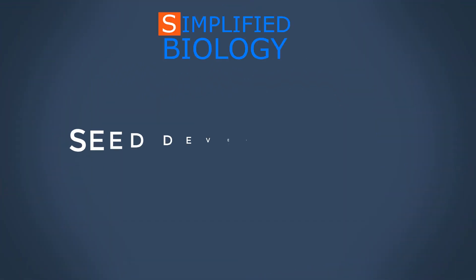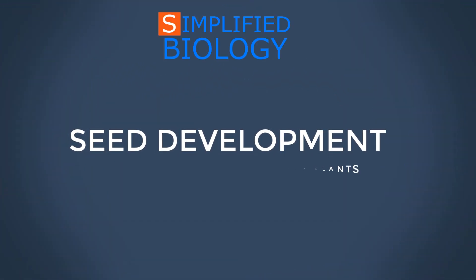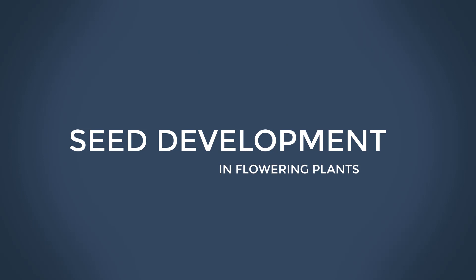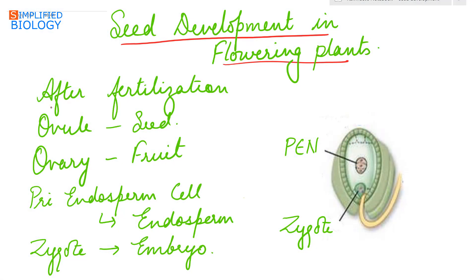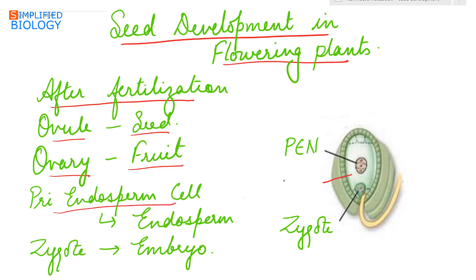Hello friends, welcome to Simplified Biology. Today's topic is seed development in flowering plants. After fertilization, that is post-fertilization, the ovule develops into the seed and the ovary develops into the fruit. During seed development, the primary endosperm cell having the primary endosperm nucleus divides to form the endosperm, while the zygote divides to form the embryo.